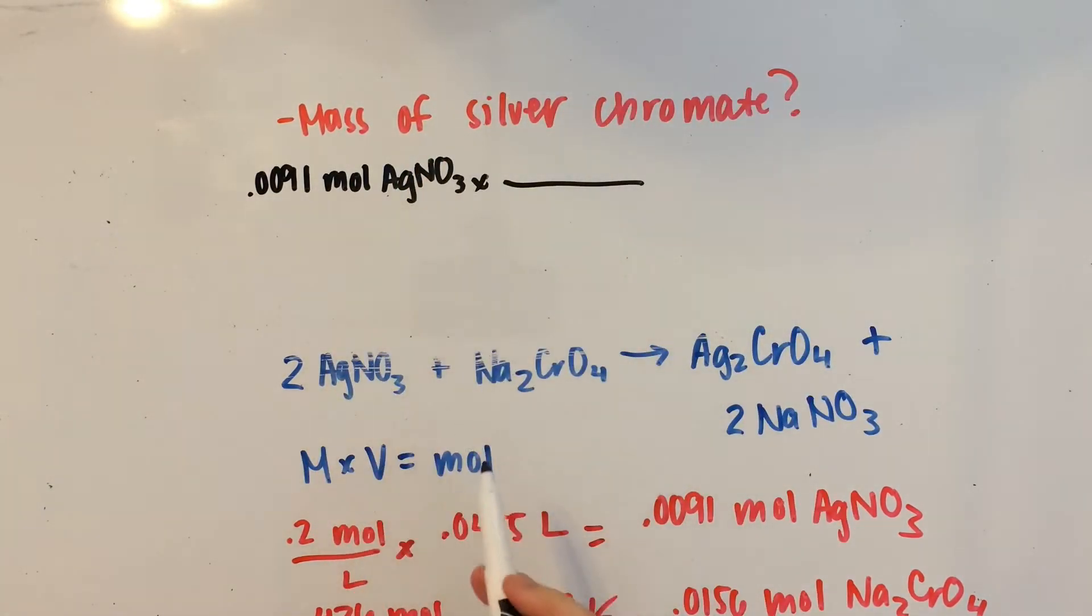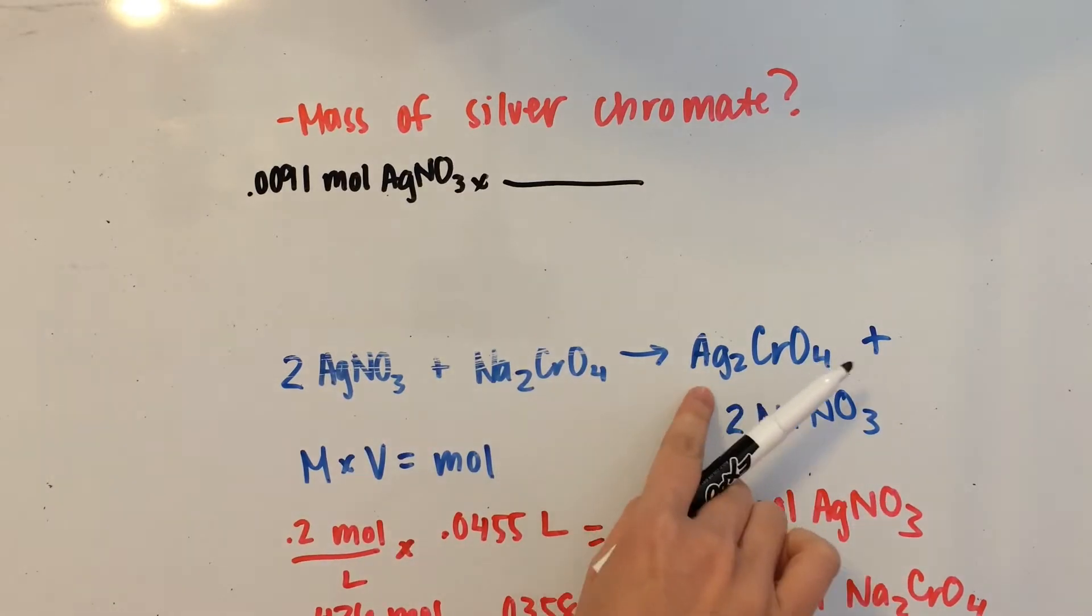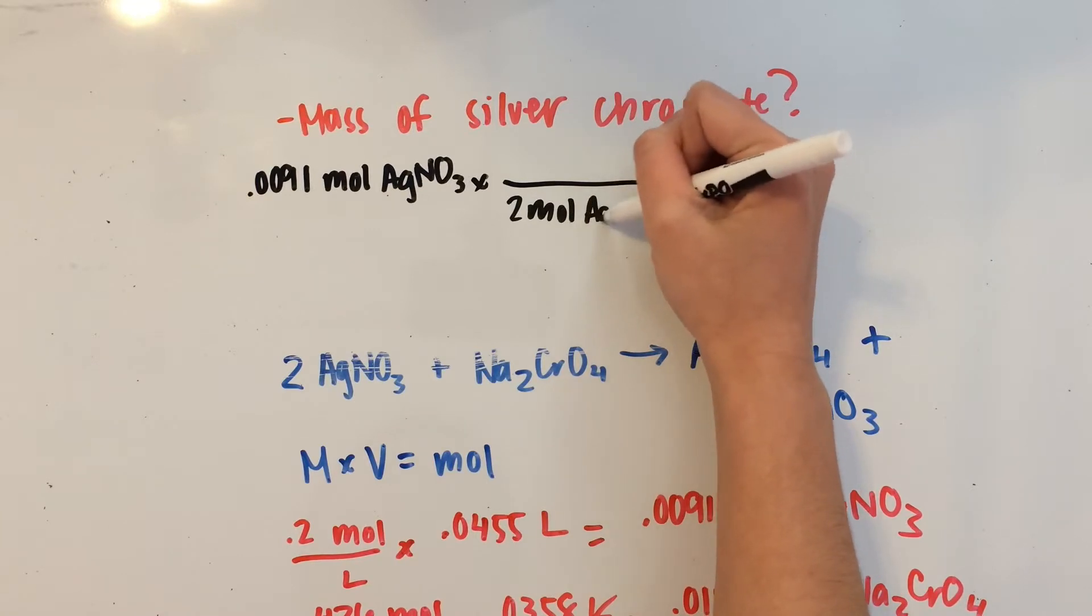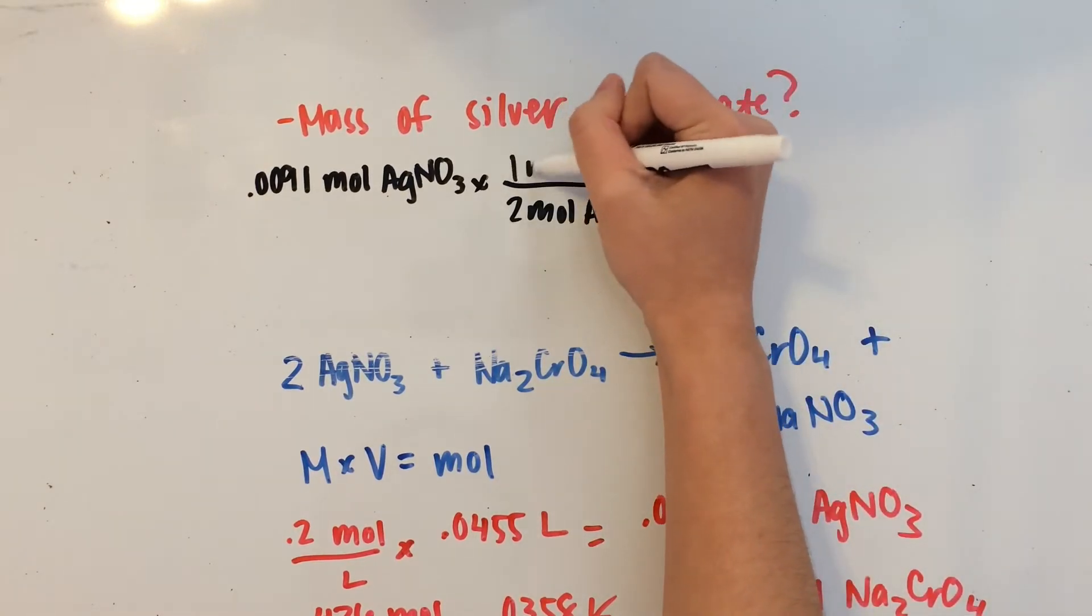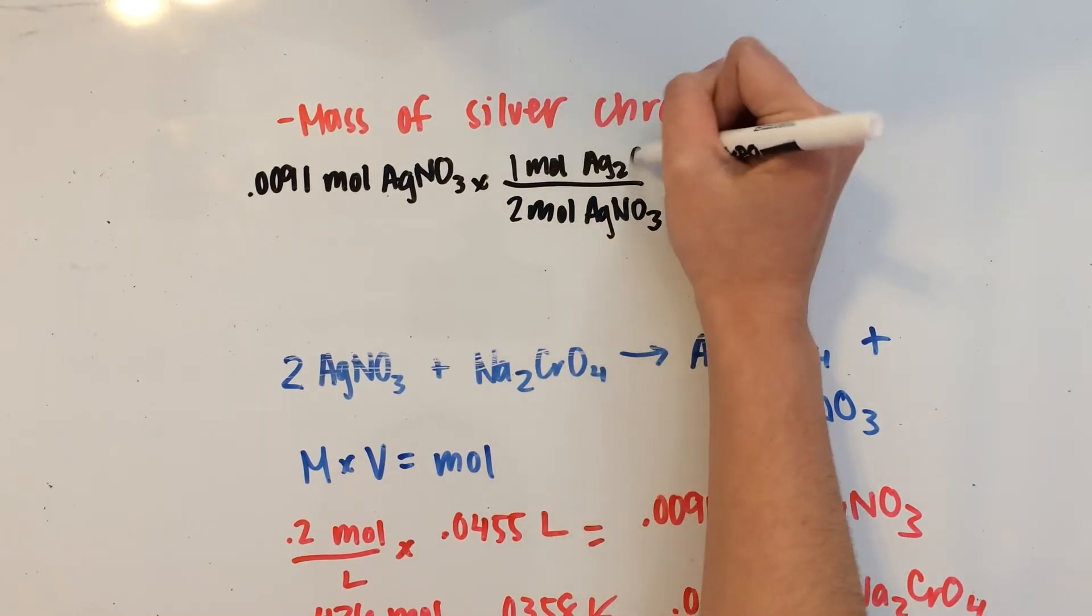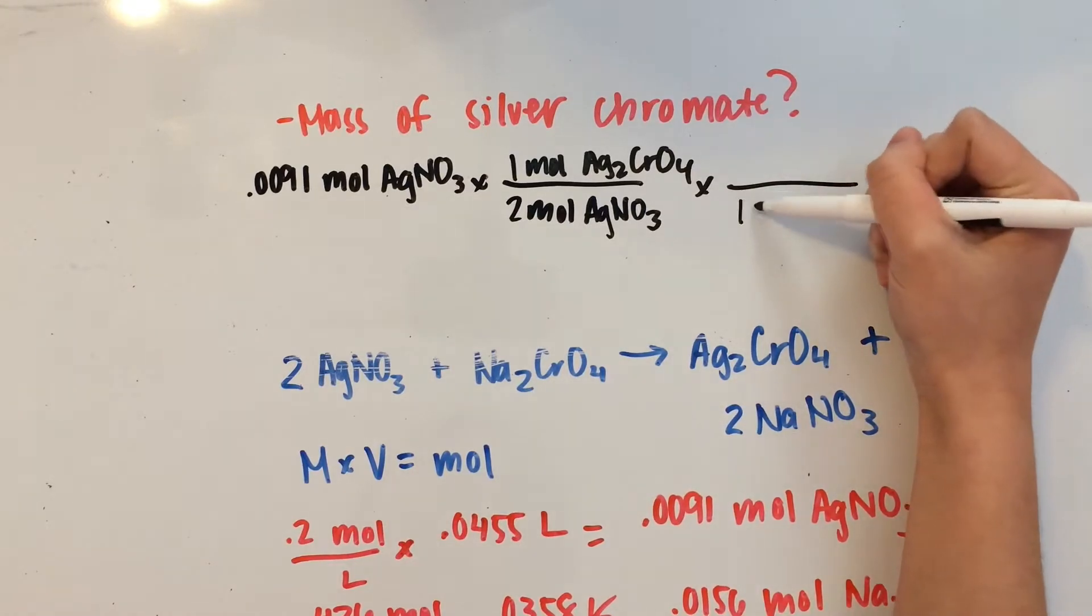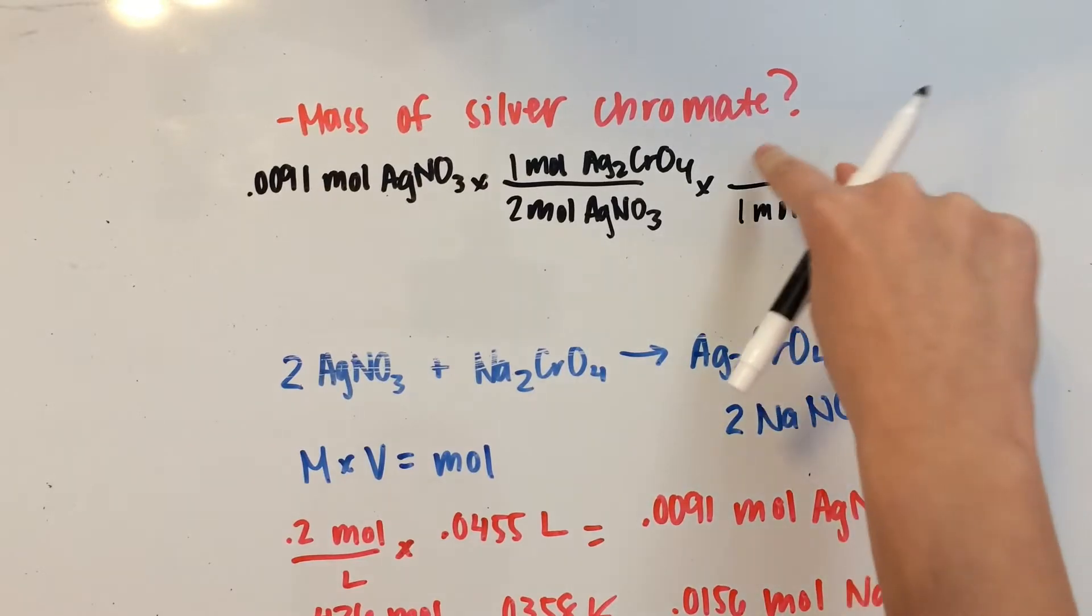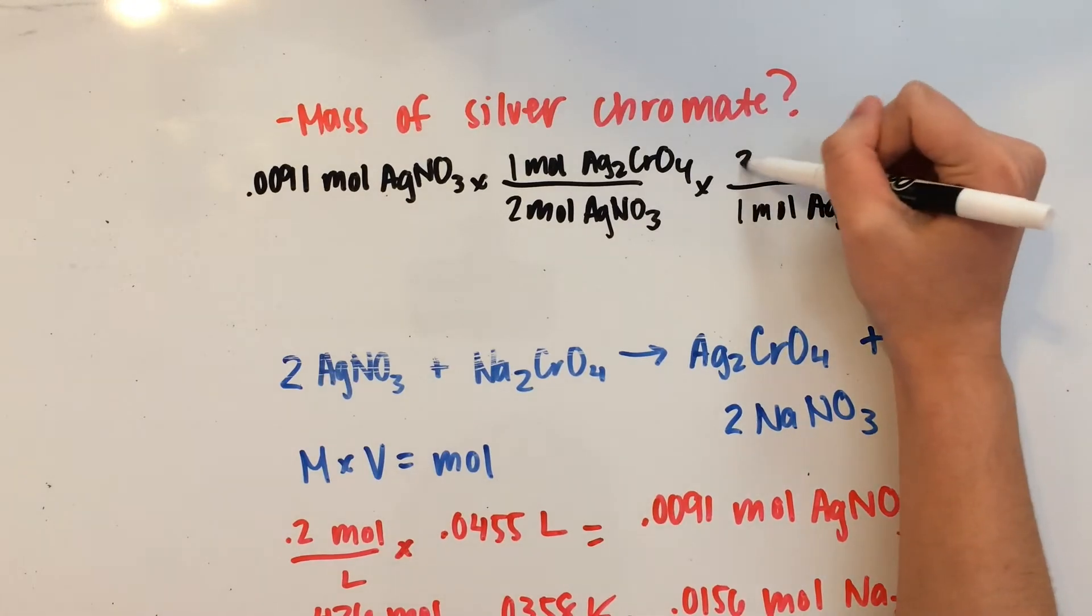Now, to cross out the AgNO3s, we'll have to use the mole ratio. So it says that we have 2 moles of AgNO3 for every 1 mole of silver chromate. So 2 moles of AgNO3 for every 1 mole of Ag2CrO4. And we're going to multiply this by the molar mass of Ag2CrO4 to get grams on top. And the molar mass of silver chromate is 332 grams.